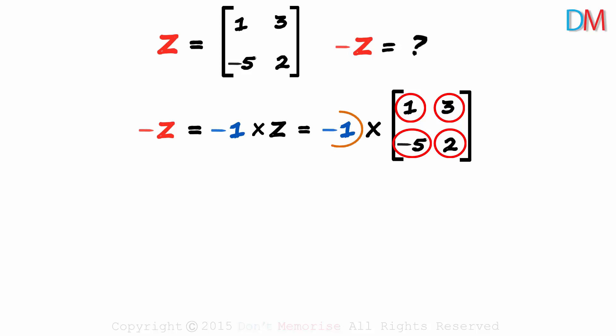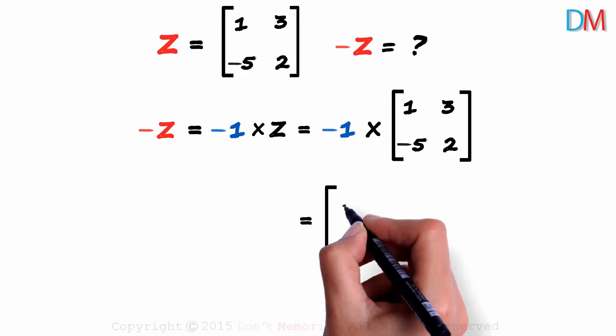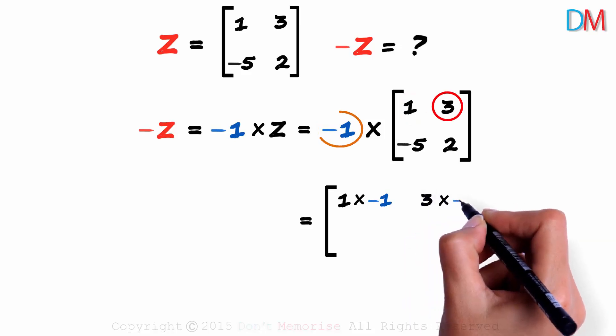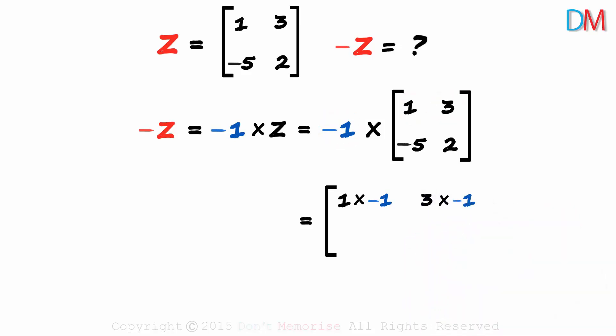Each element will be multiplied with minus 1. 1 will be multiplied with minus 1, then 3 will be multiplied with minus 1, and the last two elements will also be multiplied with minus 1. Now we just need to solve the expressions in each of the positions to get the final matrix.